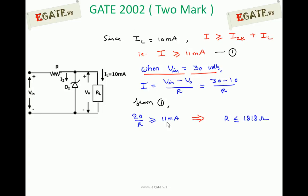That yields R ≤ 1818Ω. 20 divided by 11mA gives 1818Ω.